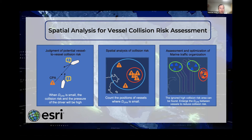The closest point of approach, also called the CPA, between two encounter vessels is an important indicator to judge the degree of collision risk. The amount of vessel encounters can be used for risk assessment of vessel collision. When the distance of CPA is equal to zero, it means that the two encounter vessels have collided.